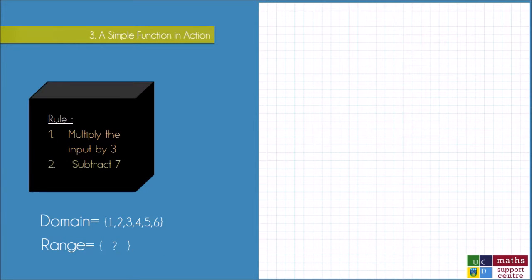Let's move away from the vending machine example now and have a look at an actual mathematical function. So my inputs to a mathematical function are going to be numbers, and this rule is telling me that I need to multiply the number I input by 3 first, and then subtract 7.